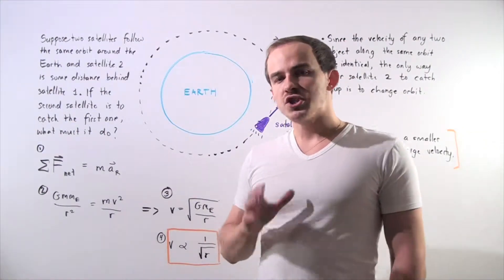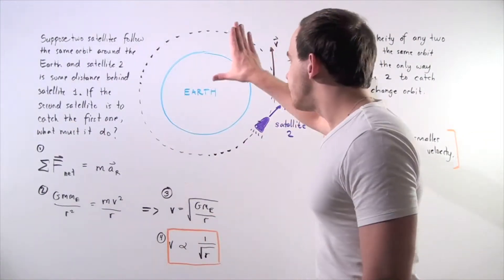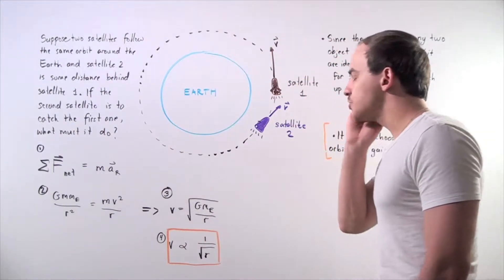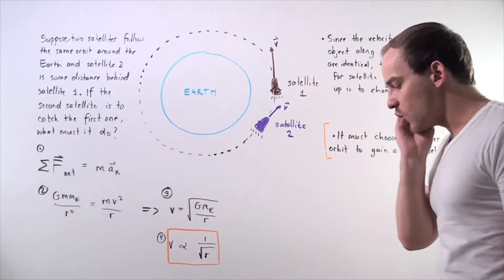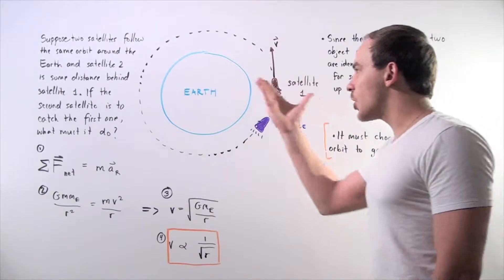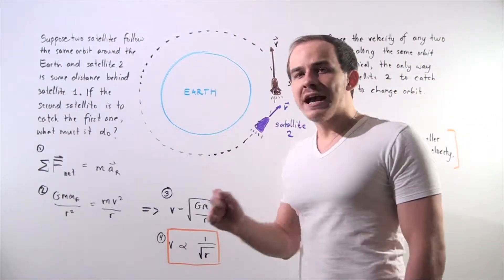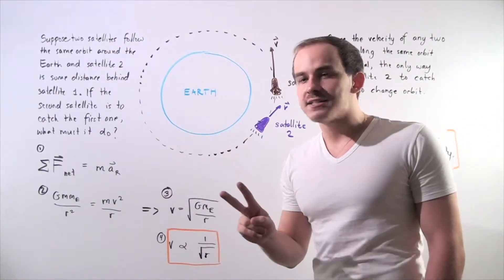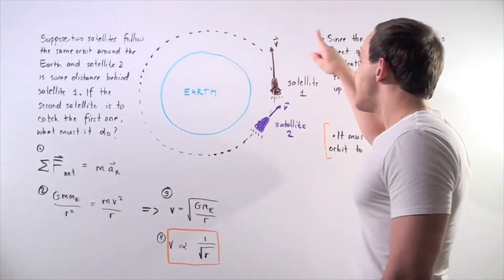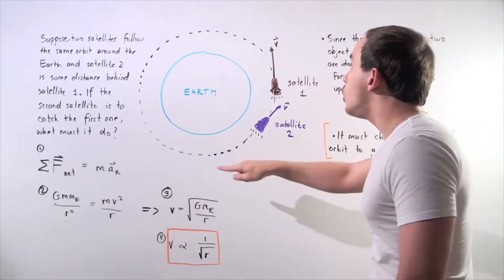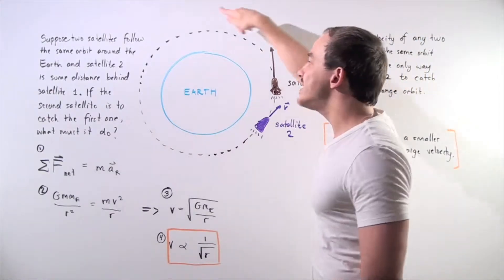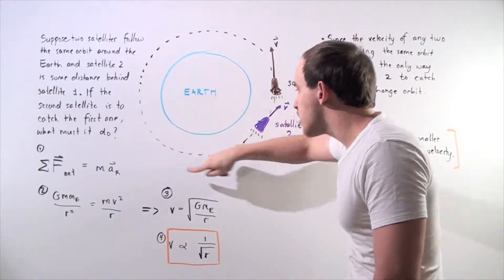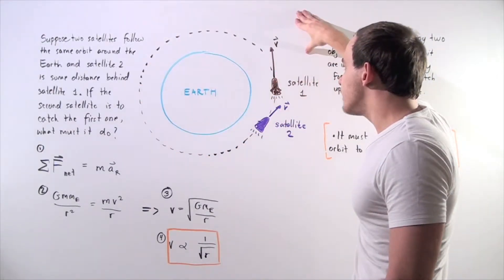Let's suppose we have the following illustration. We have the earth and two identical satellites orbiting our earth along the same exact circular pathway.